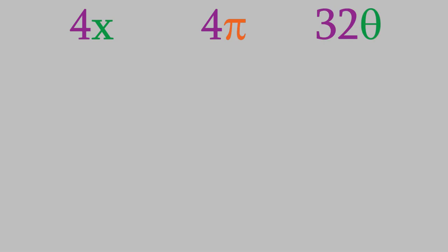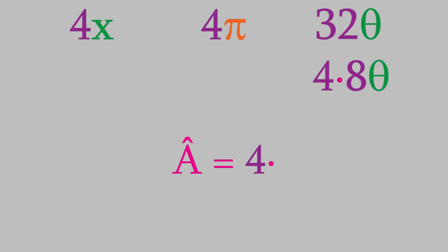4 times x, 4 times pi, and 32 times theta. Notice that all three of these involve multiplying something by 4. Even the last one can be thought of that way, because we could look at it as multiplying 8 theta by 4. We can write all three of these in a different way. Suppose we use this symbol to indicate the act of multiplying whatever comes after it by 4. This is known as an operator. You can always tell that a particular symbol is an operator because of this mark above it, which is sometimes called a hat.